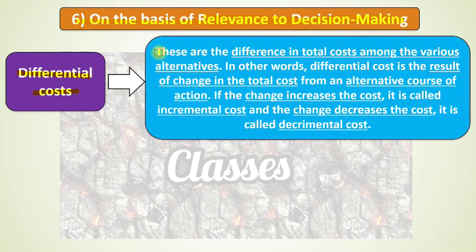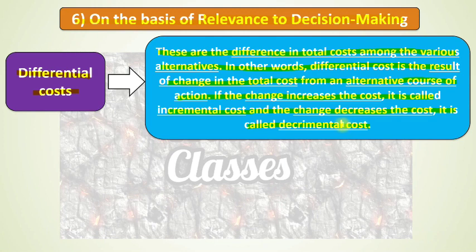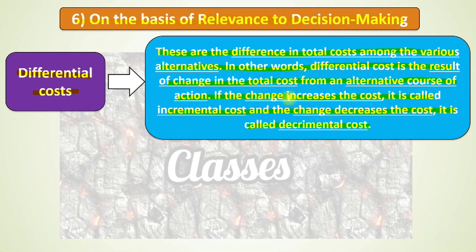Differential cost is the difference in total cost among various alternatives. In other words, it is the result of a change in total cost from an alternative course of action. If the change increases the cost, it is called incremental cost. If the change decreases the cost, it is called decremental cost. The key point is that differential cost is the difference between total cost and the alternative course of action — it can lead to either incremental or decremental cost.